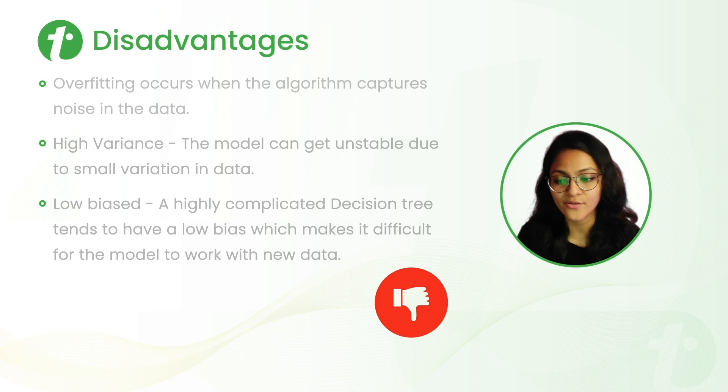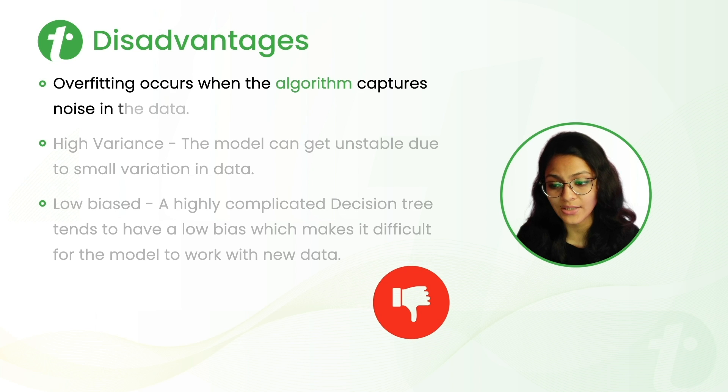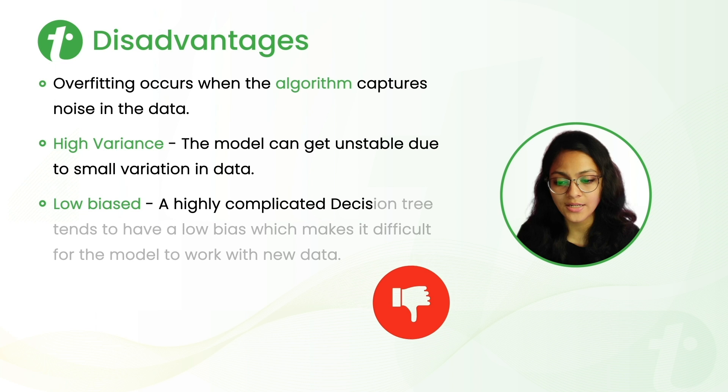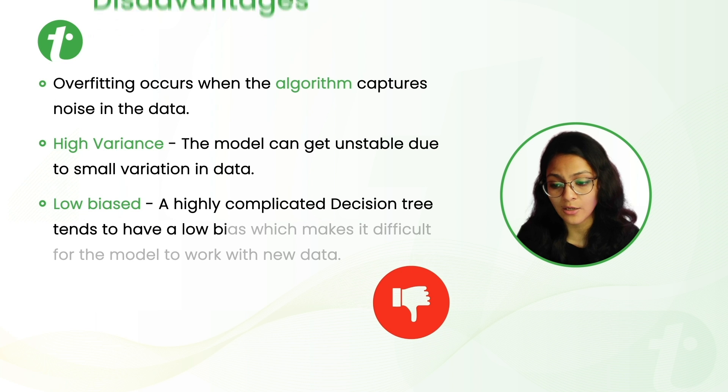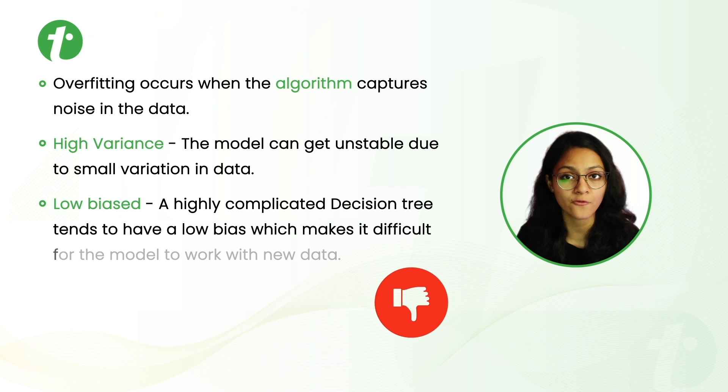Now, what are the disadvantages of decision tree? Overfitting occurs when the algorithm captures noise in the data. High variance. The model can get unstable due to small variation in data. Low biased. A highly complicated decision tree tends to have a low bias which makes it difficult for the model to work with new data.